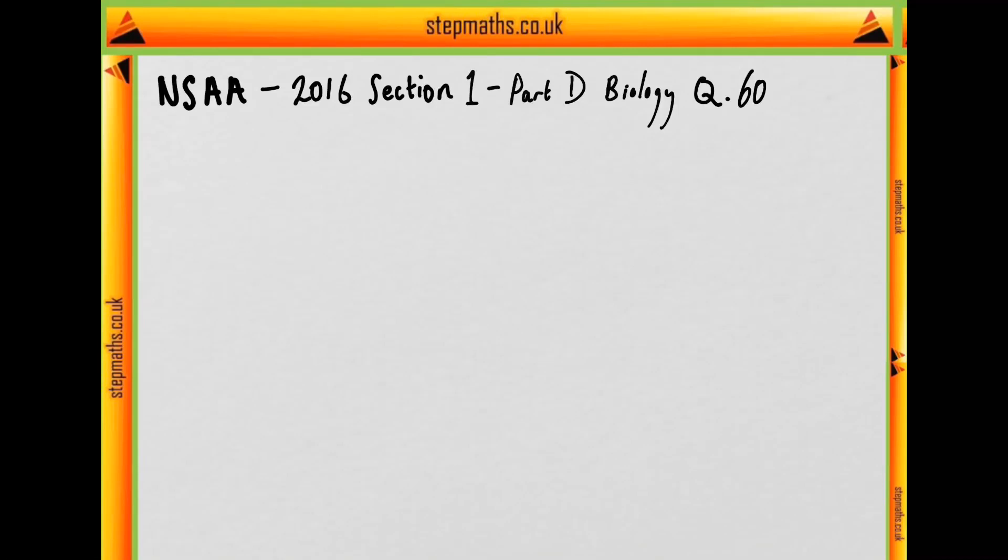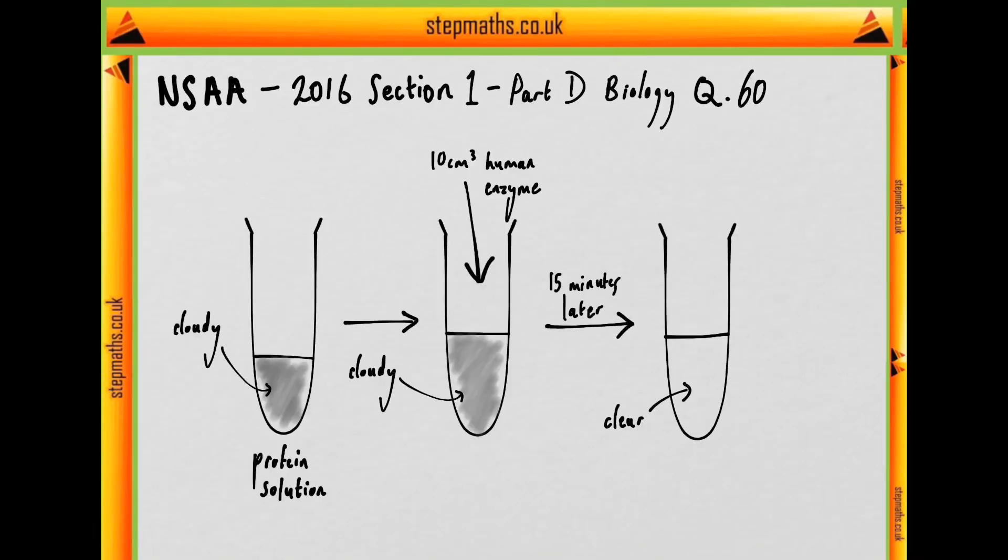In question 60, we're told that a student set up the following apparatus at a temperature of 25 degrees and at a pH of 7.